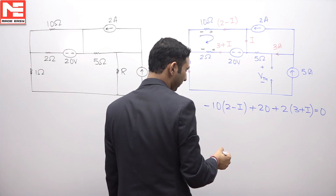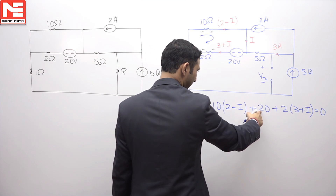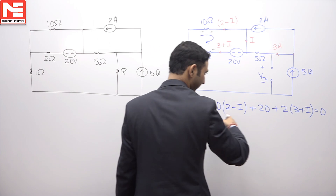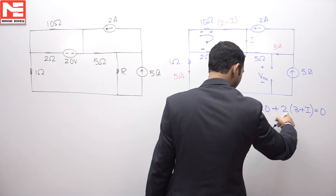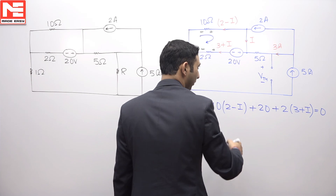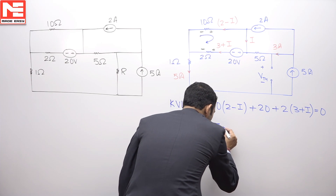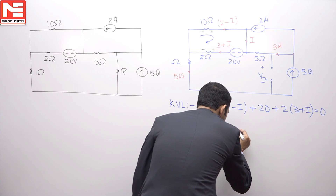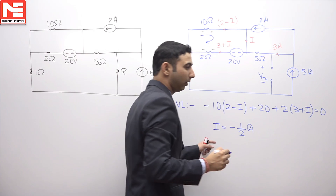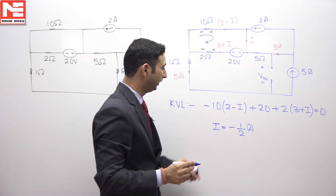Solving this equation, it is minus 20 plus 20 — these two will get cancelled — and then we are left with 2i and 6. Expanding the equation, i will be coming equal to minus 1 by 2 amperes. So solving this, the current i is minus 0.5 ampere.